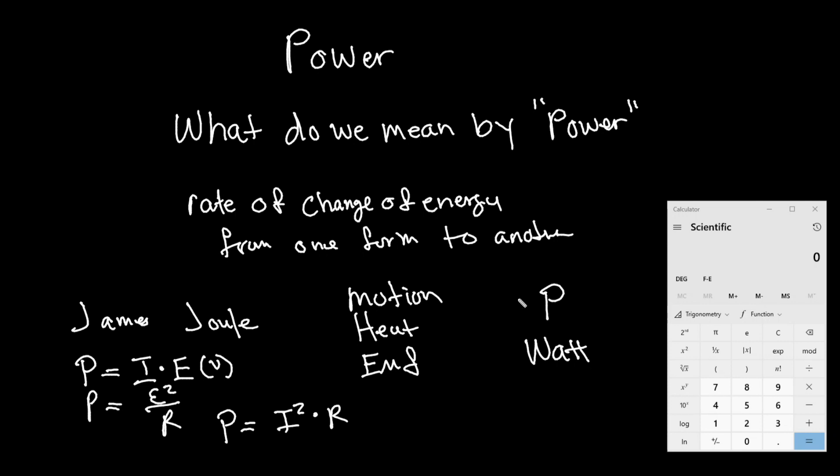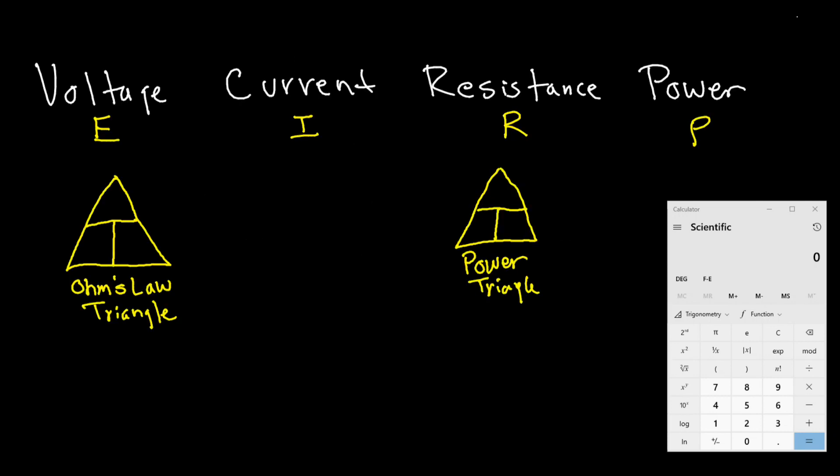But now let's roll this all back into our Ohm's Law equation. So here we have our voltage which is represented by E, our current which is represented by I, resistance which is represented by R, and power which is represented by P. So let's put those into our Ohm's Law triangle like we did yesterday. Now we can calculate voltage, current, and resistance. Let's draw up a simple little circuit.